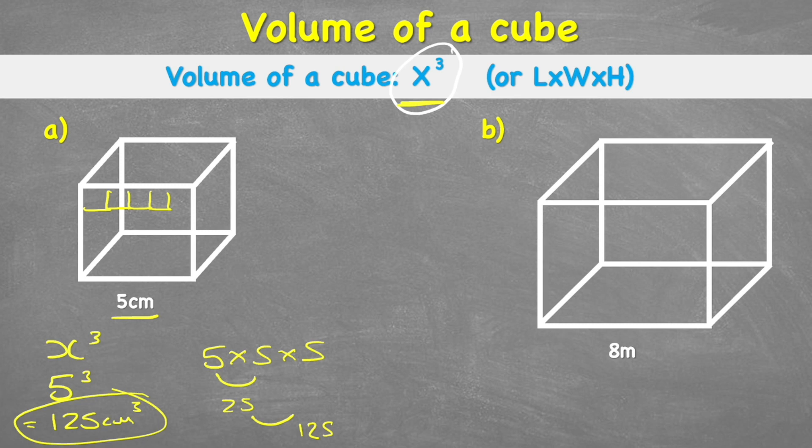Let's see if we get the same answer with the other formula of length times width times height. Well, the length is five centimeters, the width is five centimeters, and the height is five centimeters. So what you can see is we've actually just got the same question as we had before. And five times five times five, as we said, is 125 centimeters cubed.